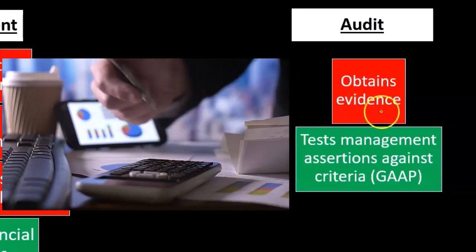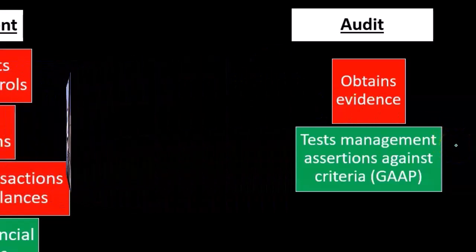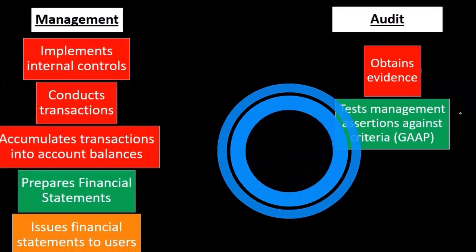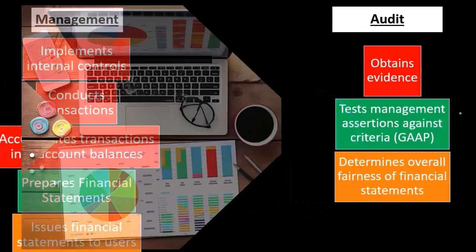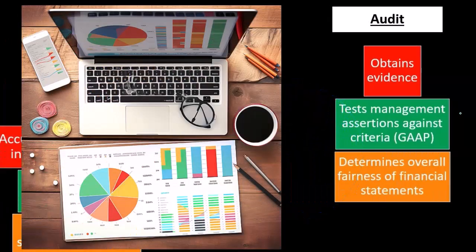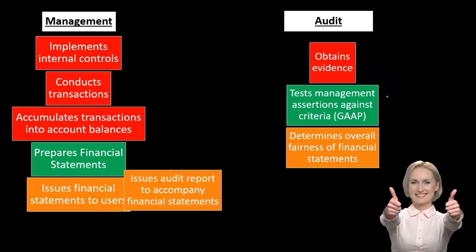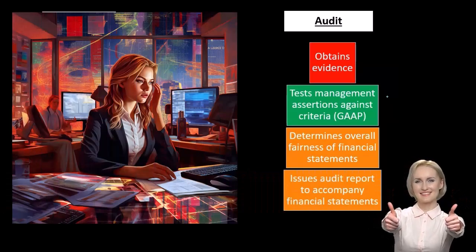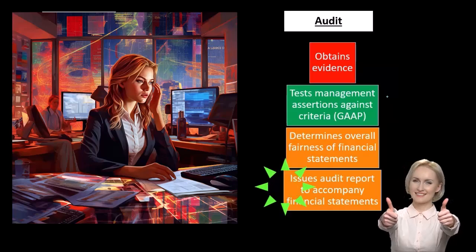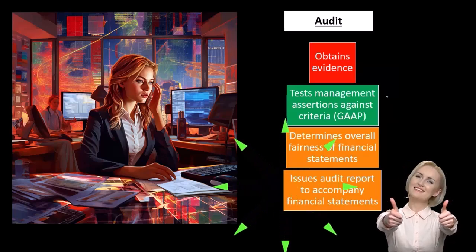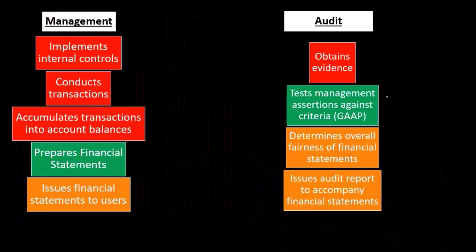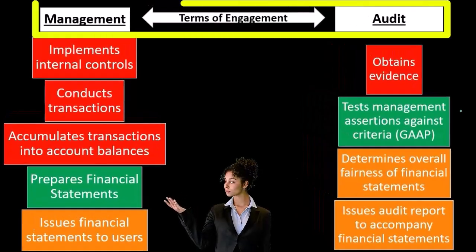We test management's assertions against the criteria — those being generally accepted accounting principles — to determine the overall fairness of the financial statements. We're going to make a determination, and once we do, we're going to issue audit reports on the company's financial statements and issue our opinion on the financial statement.